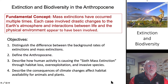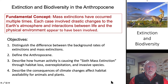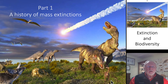Today, we're going to talk about extinction and biodiversity in the Anthropocene. The fundamental concept is that mass extinctions have occurred multiple times in the Earth's history, each involving drastic changes in the atmosphere, and interactions between life and the physical environment seem to be involved. Part one: let's talk about a history of mass extinctions.